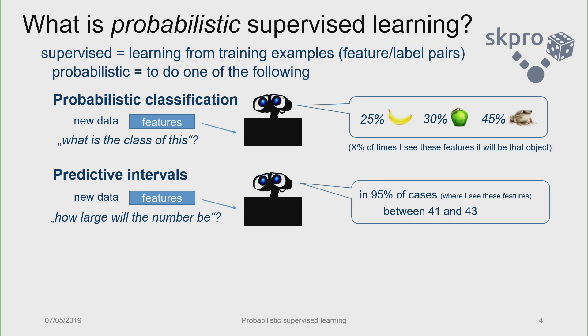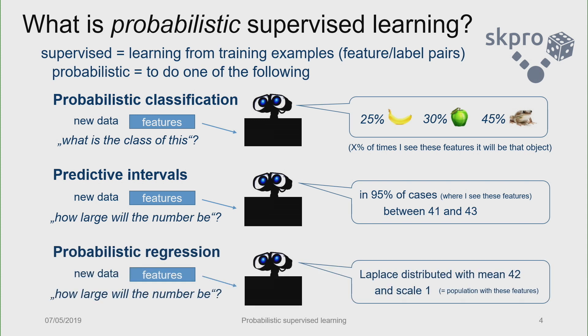So one way to do this is to produce predictive intervals, which say, for example, in 95% of the cases or long term, the observation will be between these two numbers. Or you can go fully probabilistic, right? You can specify a full distribution over numbers, over the reals. So say, in the long term, it's going to be as if it were sampled from a Laplace distribution with certain parameters, for example, or normal or whatever you want to predict. So that is essentially what SKPro is meant to cover, especially the regression aspects, which currently it's a little bit difficult to get out of scikit-learn or related packages.